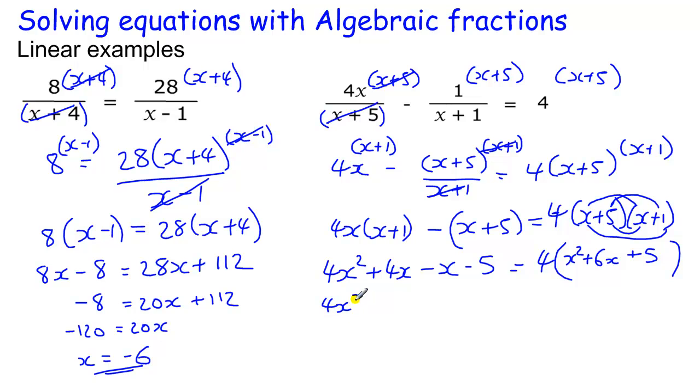And then just multiply out that bracket, which gives me 4x squared, plus 24x, plus 20, and we've got 4x squared on this side, and 4x squared on this side, so if I take away 4x squared from both sides, that actually cancels those two away.